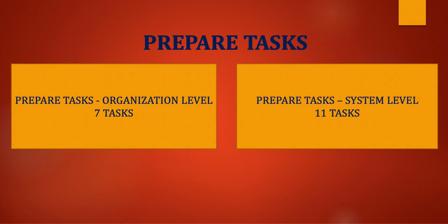At the organization-level preparation tasks, it means the essential activities that the organization as a whole needs to execute in order to successfully prepare and deploy the remaining steps of the risk management framework. Under the organization-level tasks, there are seven tasks. One of those tasks is risk management roles — meaning the organization needs to determine who will take sensitive positions in the execution of the risk management framework steps.